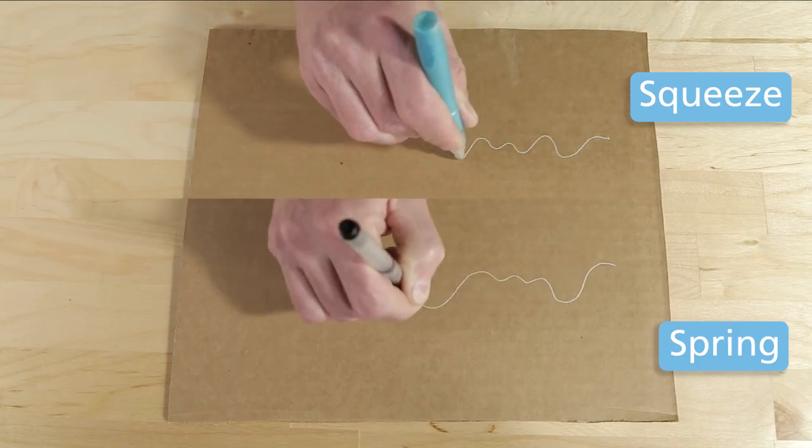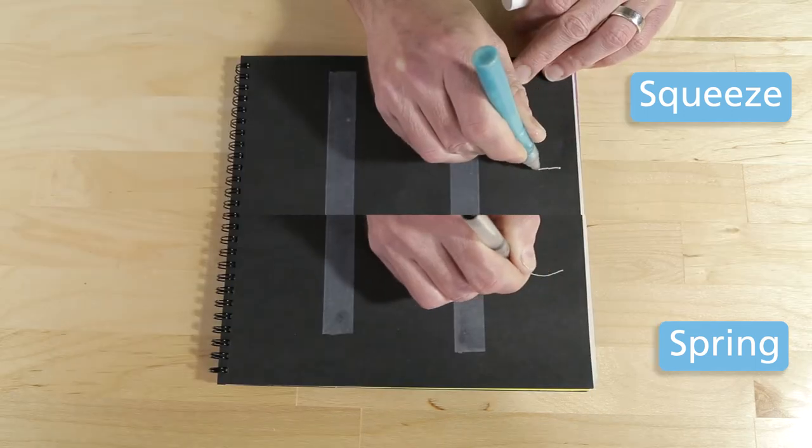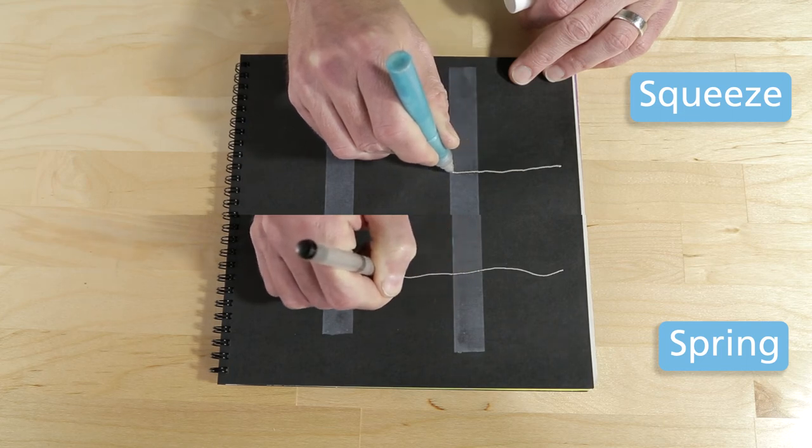So with cardboard, both pens really laid down the ink very nicely. Now we're going to try paper with scotch tape laid over it so that we can see what happens with the transition between the two materials.